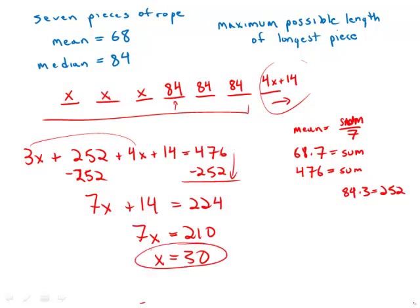That is not what the question is asking for. The question is asking for the maximum length. So the maximum length is going to be 4 times 30, which is 120 plus 14. And that is 134. That is the maximum length. And that is answer choice D.